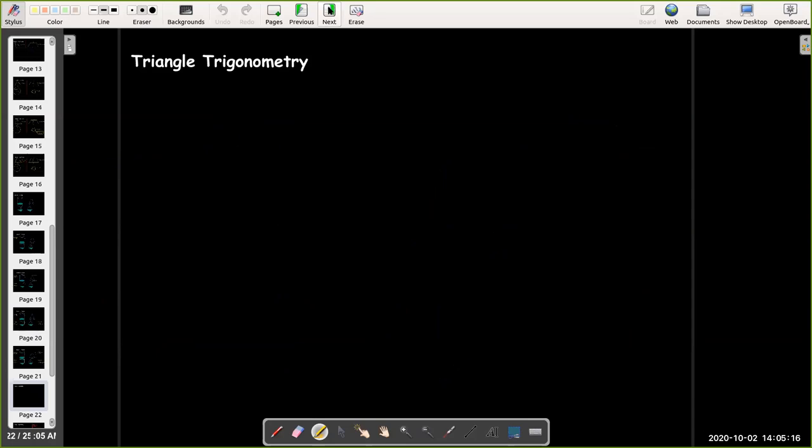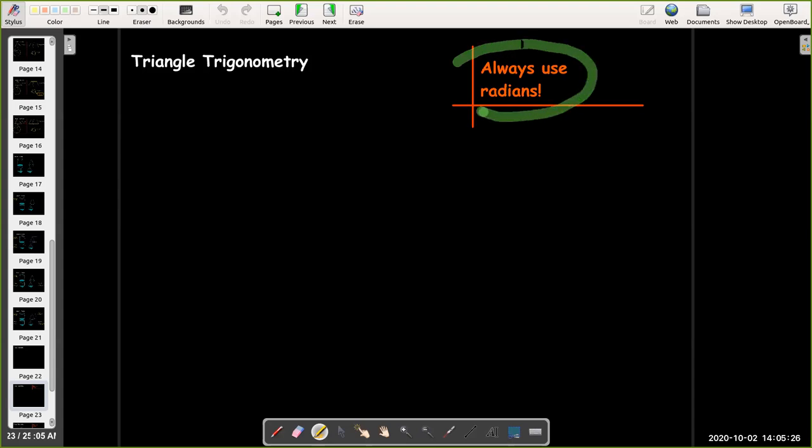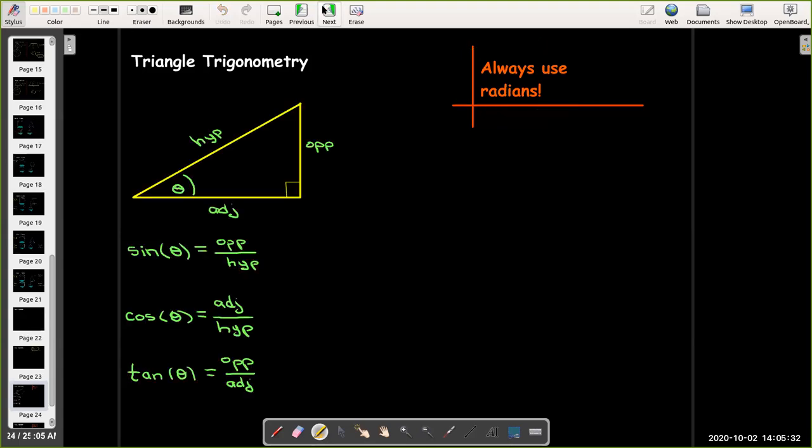And finally, quick review of triangle trigonometry. The key is that when we're working with triangle trigonometry in calculus, we should always use radians. So basic triangle. You have an angle theta, the adjacent side, the opposite side, and the hypotenuse.